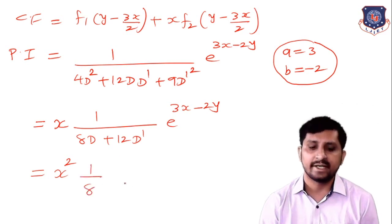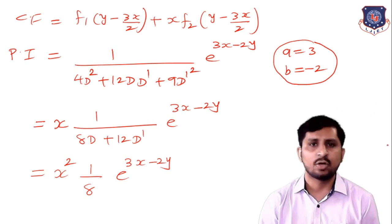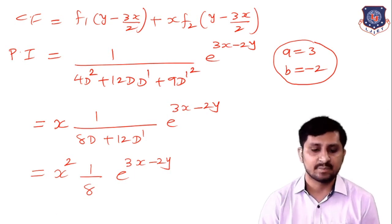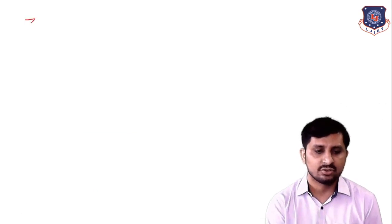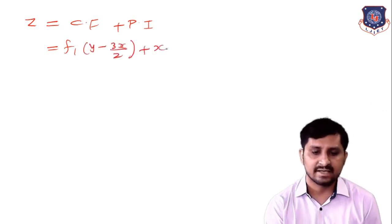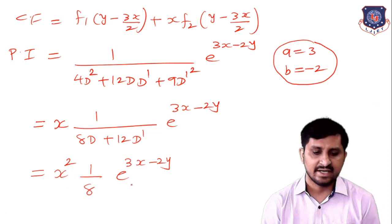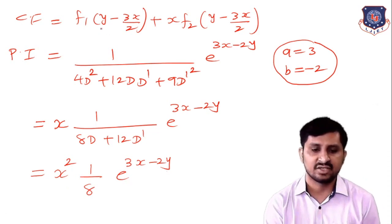Now we have x² and differentiate 8D + 12D' with respect to D, giving 8. There is no operator remaining, so the particular integral is x²/8 · e^(3x - 2y). The general solution is z = f₁(y - 3x/2) + x·f₂(y - 3x/2) + x²/8 · e^(3x - 2y).